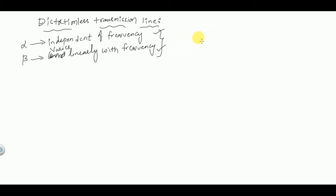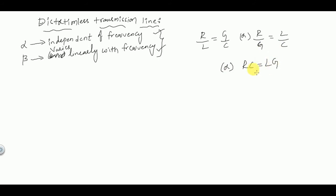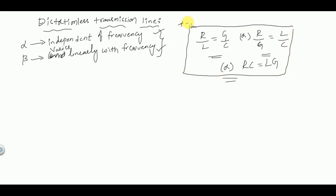The condition for a distortionless transmission line is R/L = G/C, which is equivalent to R/G = L/C, or equivalently RC = LG. All three representations are correct. These conditions are very important, especially for exams.